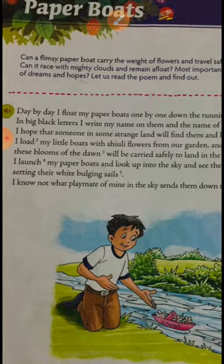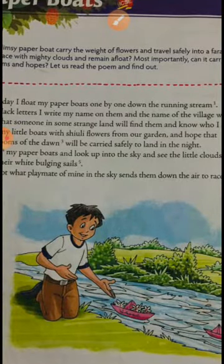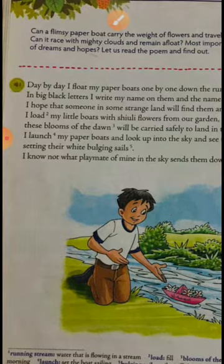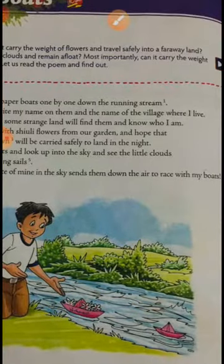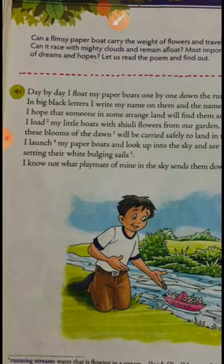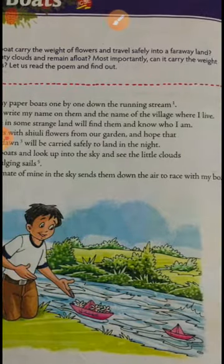Day by day I float my paper boats one by one down the running stream. You can see in the picture the boy leaving the paper boats into the running stream. Running stream means water that is flowing continuously. In big black letters I write my name on them — the boy is writing his name on those paper boats with big letters — and the name of the village where he lives. He hopes that someone in some strange land will find them and know who he is.